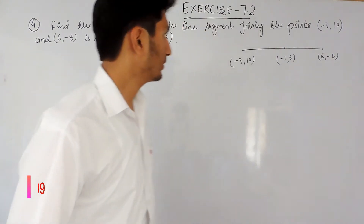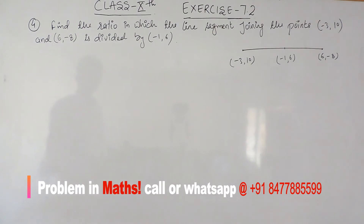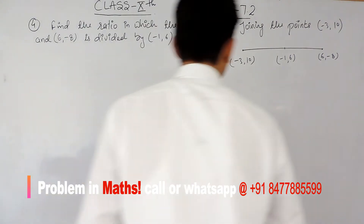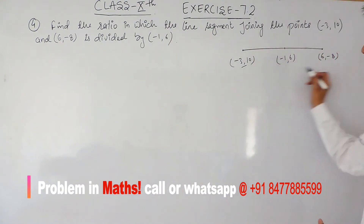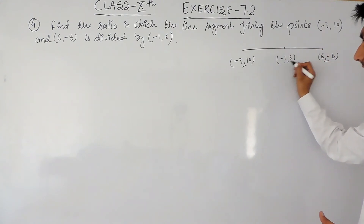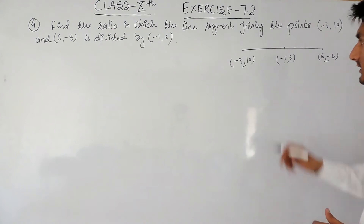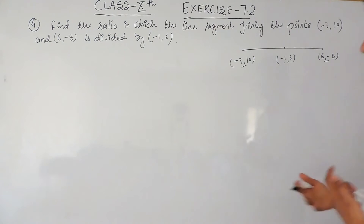Hello everyone. In this video we are going to solve question number 4 of exercise 7.2. In this question you have to find the ratio in which the line segment joining the points (-3, 10) and (6, -8) is divided by the point (-1, 6). So these are the two endpoints, and when you join them, there is a point with coordinates (-1, 6) that divides this line in some ratio — you have to find that ratio.